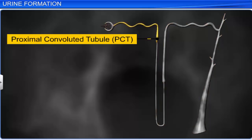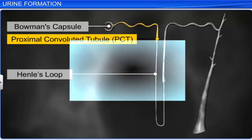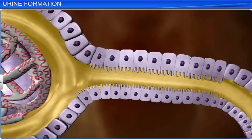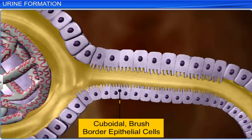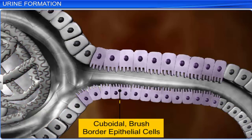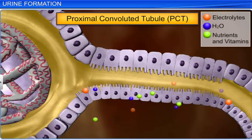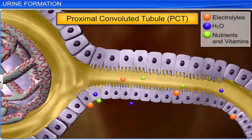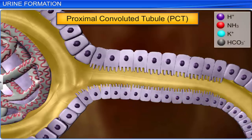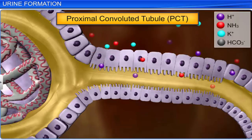The proximal convoluted tubule is the section of the nephron situated between Bowman's capsule and Henle's loop. The glomerular filtrate from Bowman's capsule enters this tubule, which is lined by cuboidal brush border epithelial cells that help to increase the surface area for reabsorption. The proximal convoluted tubule reabsorbs about 70 to 80 percent of the electrolytes and water, and almost all the essential nutrients and vitamins. It also selectively secretes ammonia, hydrogen ions, and potassium ions into the filtrate, and absorbs bicarbonate to maintain the pH and ionic balance of body fluids.